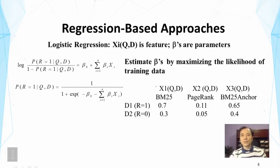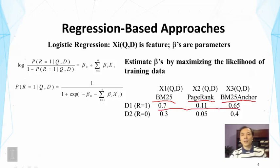In this example we have three features: one is the BM25 score of the document and the query; one is the PageRank score of the document, which may or may not depend on the query (a topic-sensitive PageRank would depend on the query, whereas general PageRank does not); and we also have a BM25 score on the anchor text of the document. These are the feature values for a particular document-query pair. For document D1, the judgment says it is relevant, while the second training instance is not relevant. This is an oversimplified case with just two instances, but it's sufficient to illustrate the point.